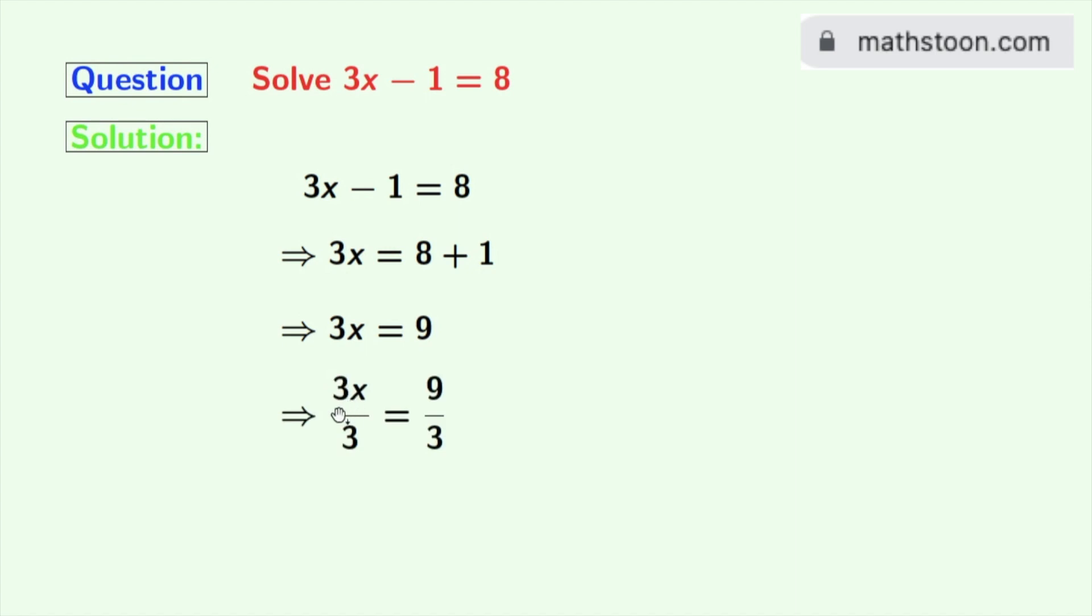By doing so, we will get 3x divided by 3 is equal to 9 divided by 3. In the left hand side, 3 and 3 get cancelled and we are left with x. And as 9 divided by 3 is 3, so we finally get x is equal to 3 as our answer.